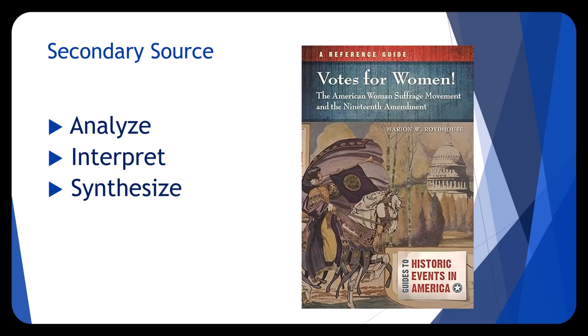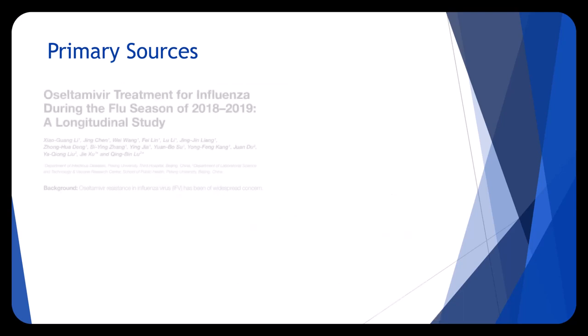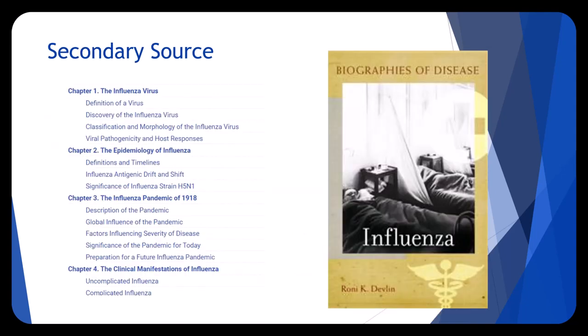Now, let's say you are writing a research paper for your health sciences class about infectious diseases and you find several scholarly articles describing original research about new treatments for the flu virus. Those would be considered primary sources because they provide a full description of original research and were written by scholars with direct knowledge of the topic.